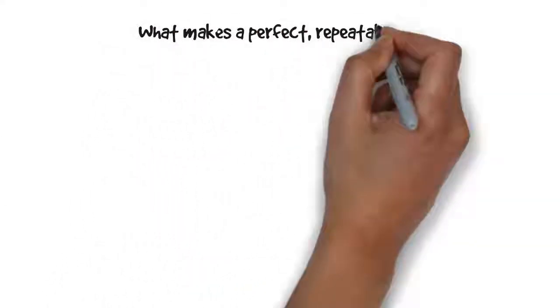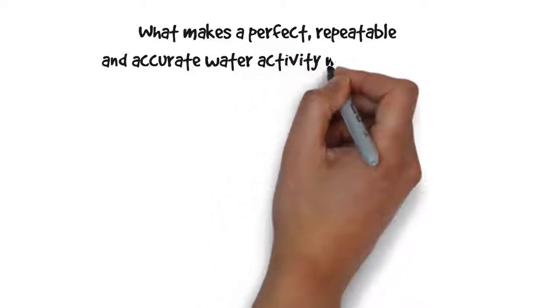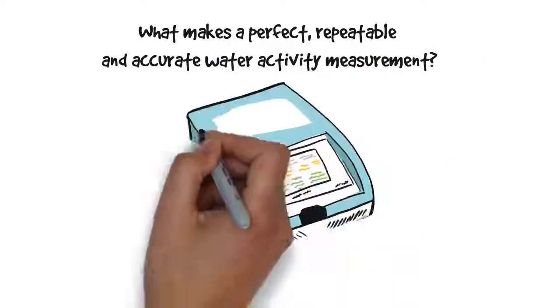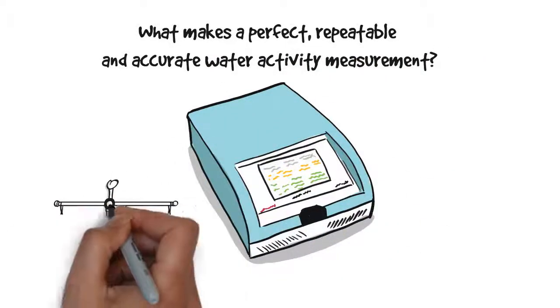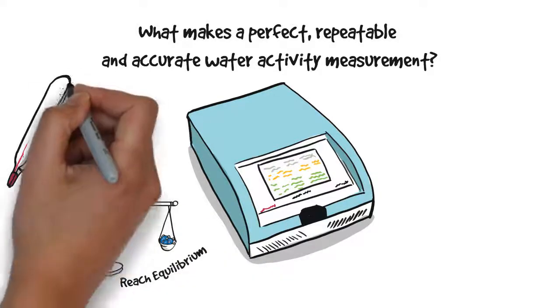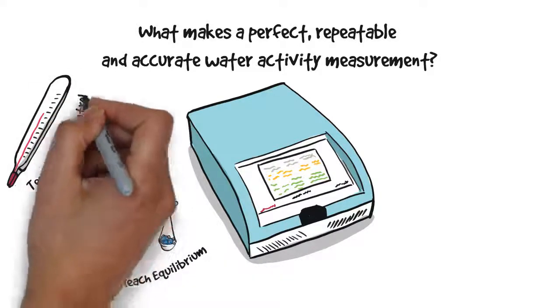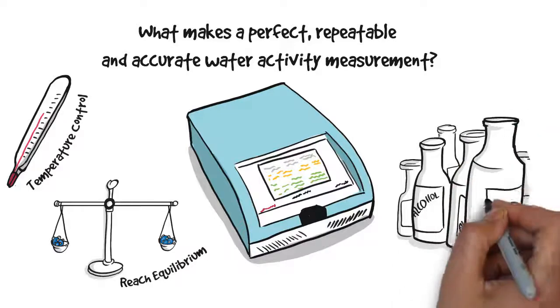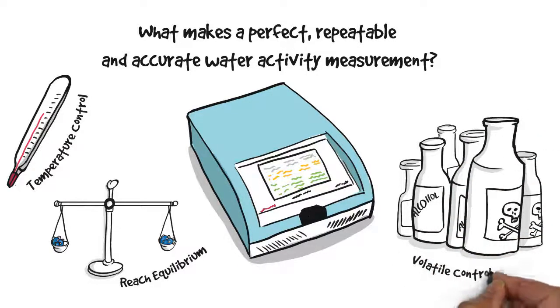What makes a repeatable and accurate water activity measurement? In measuring water activity, wait until the sample has reached stability. Measure at a consistent temperature so that you can compare values. Neutralize the influence of volatiles which can skew your results.